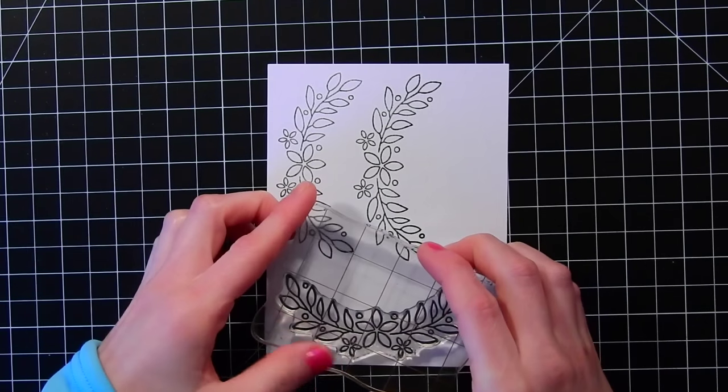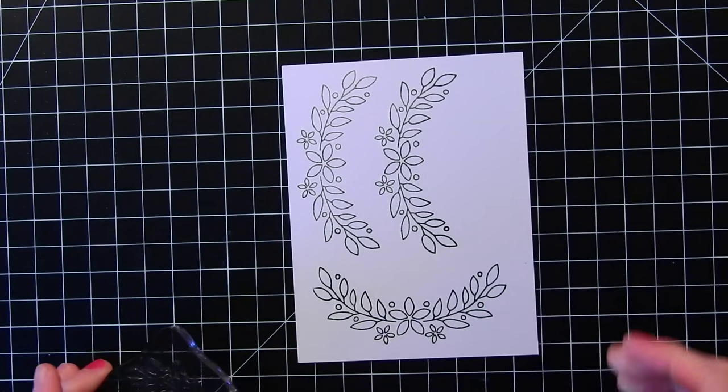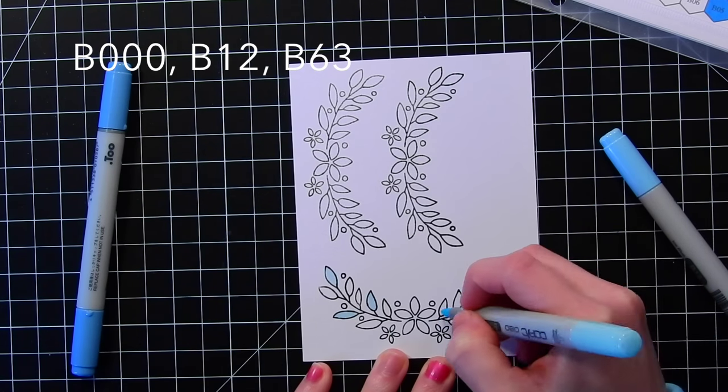So I'm stamping all of these little leaf clusters onto some cardstock here using My Favorite Things Hybrid Black Licorice ink.